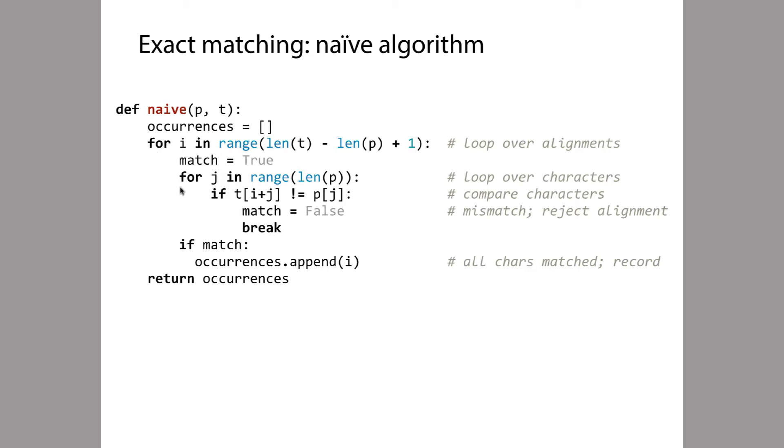And then in this inner loop, we have to determine whether the alignment corresponds to a match or not, and this requires that we compare the characters of P to the corresponding characters of T. The inner loop iterates over characters of P from left to right. And for each one, it tests to see whether it's equal to the corresponding character in the text T. If it is not equal, then we know that P does not match T at this offset. So in that case, we set this match variable to false and we break out of the inner loop. We can break because once we know that one character mismatches, we don't have to do any more character comparisons. We know that it's not a match.